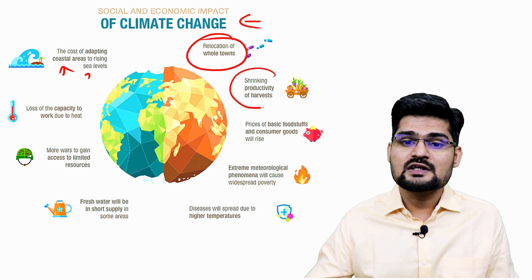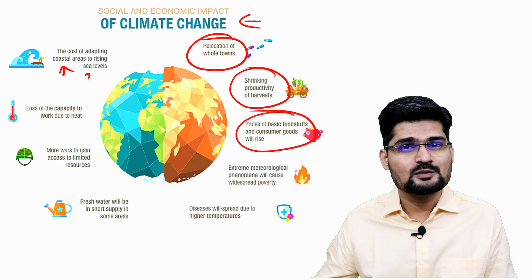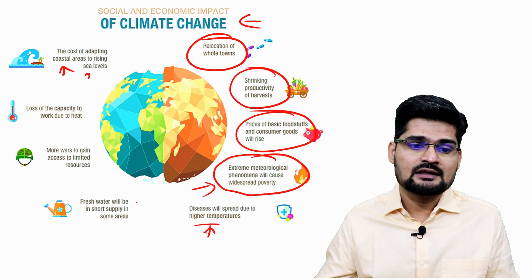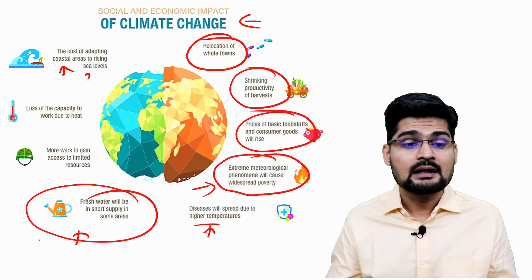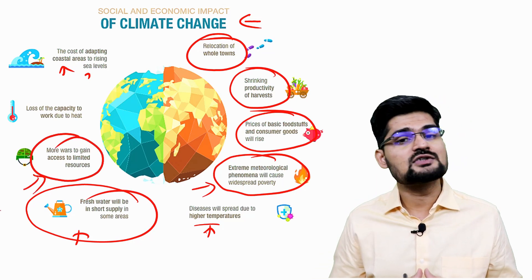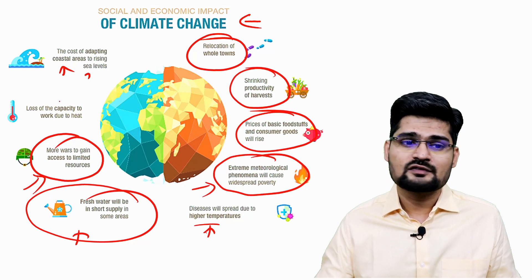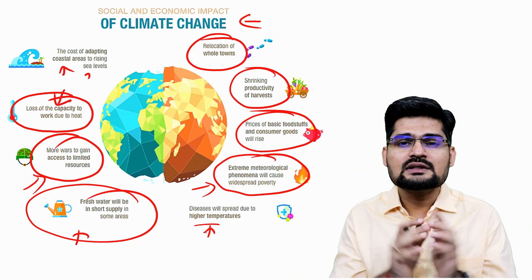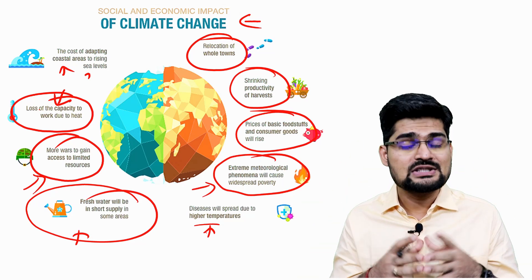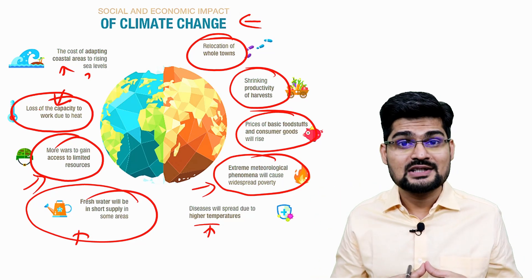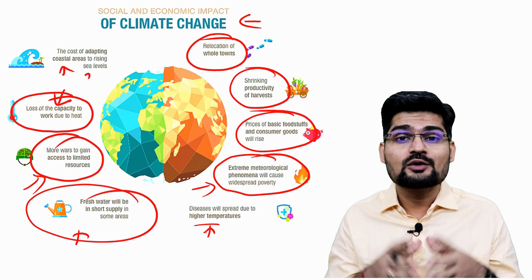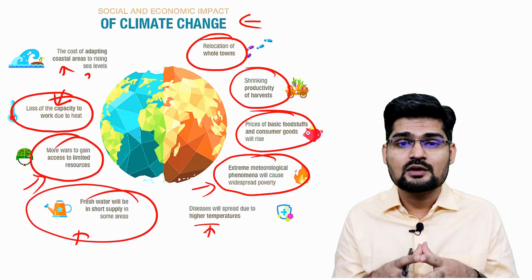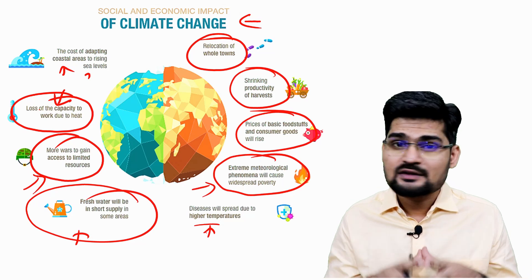Climate change impacts include: cost of adapting coastal areas to sea level rise and relocation of towns and cities; shrinking agricultural productivity; pricing of basic foodstuff; extreme meteorological events like cloudbursts; disease outbreaks; fresh water problems; resource scarcity and resulting wars and migration; pollution; and loss of capacity to work due to heat. Anthropogenic global climate change — human-induced long-term changes — is what we must address. The Paris Agreement called for moving toward carbon neutrality and an eco-friendly economy.